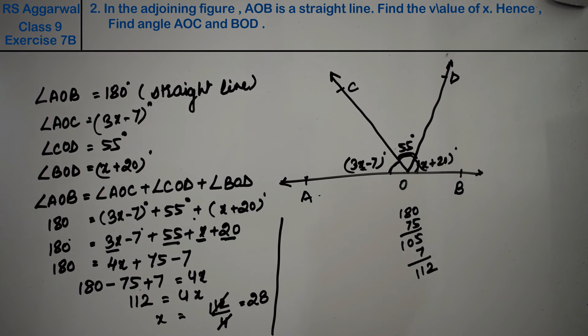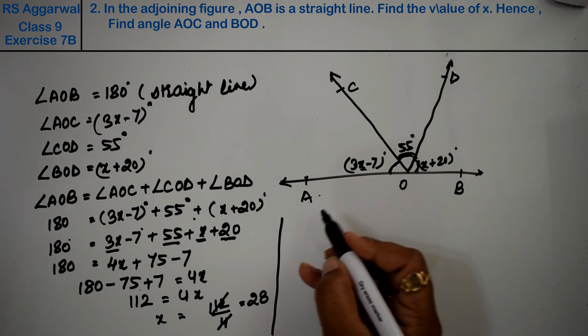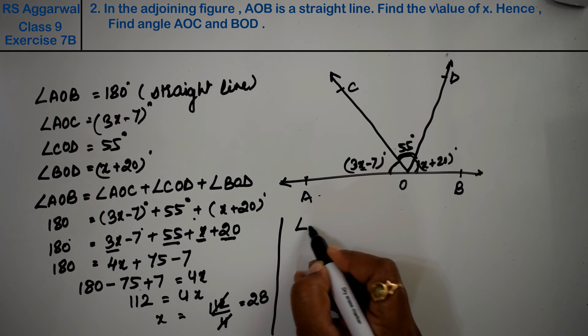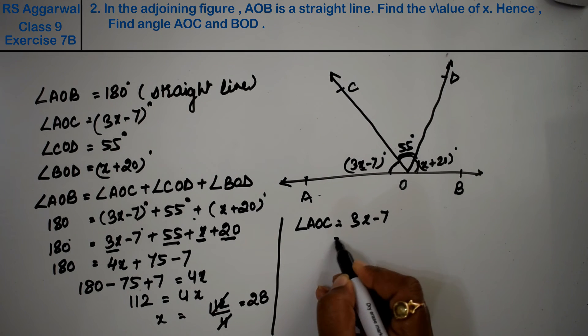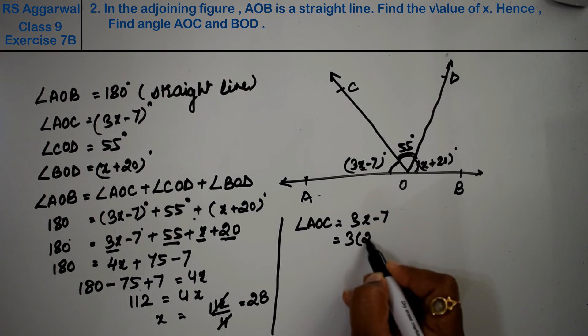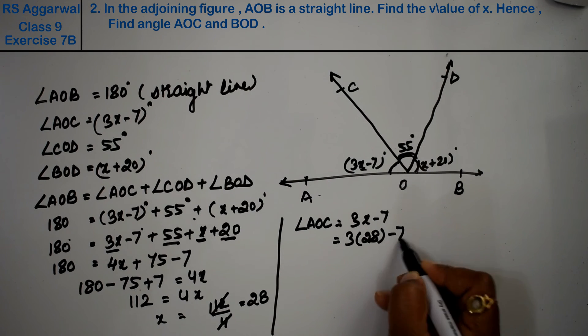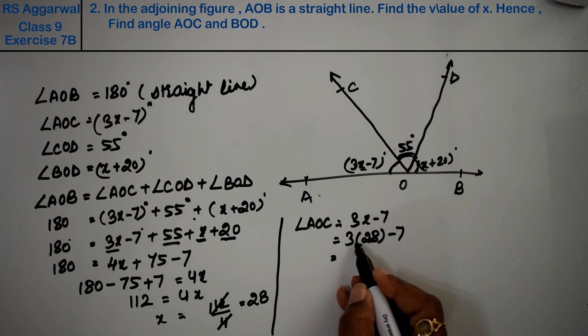Now we need to find angle AOC. The x value is found. Angle AOC was 3x minus 7. Putting the value of x: 3 times 28 minus 7.